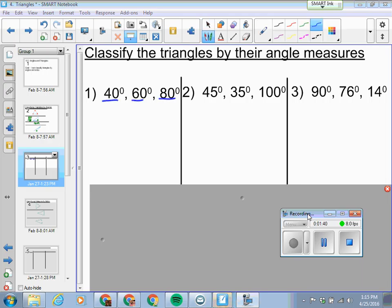So we're going to classify the following triangles by their angle measures. Feel free if you want to pause the video and try them on your own, or stay with me. The first one: 40, 60, 80, all acute angles must be an acute triangle.